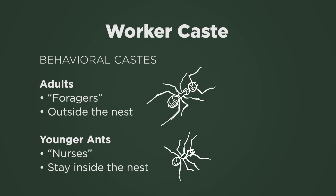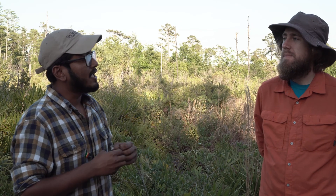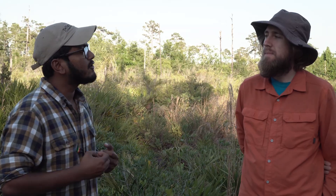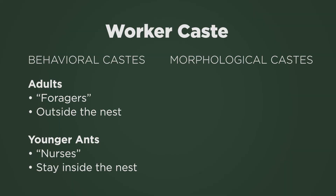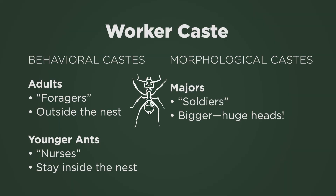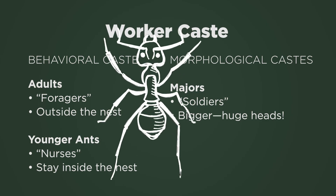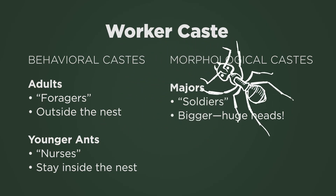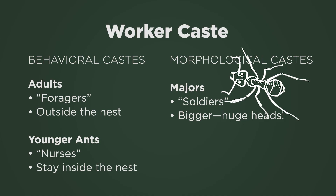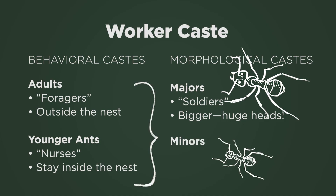The younger ones stay inside and work as nurses tending the brood, tending to the queen, cleaning up the nest. Interestingly in our system we have another caste which is the morphological caste. These are the majors, which look bigger with huge heads — they are the soldiers of the colony. Then you have the smaller ones, the minors, which do foraging and nursing.